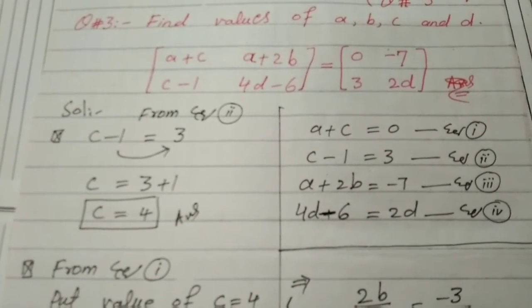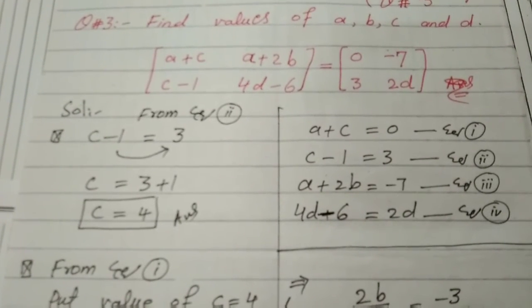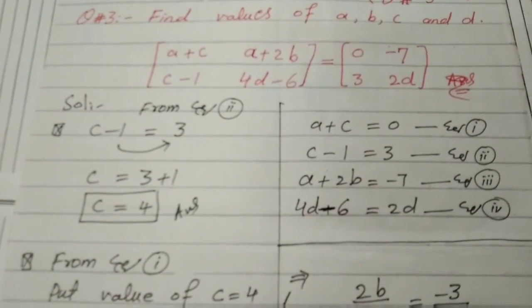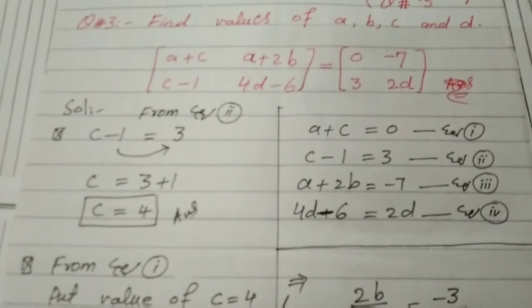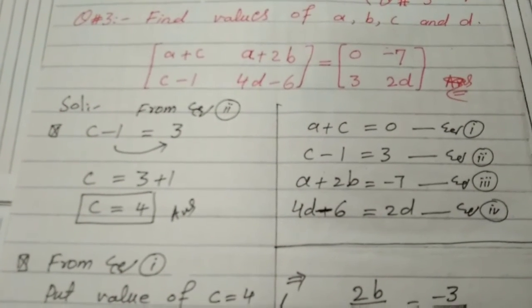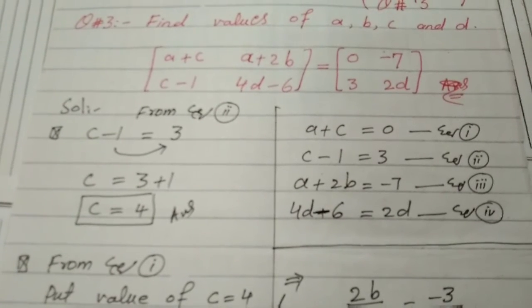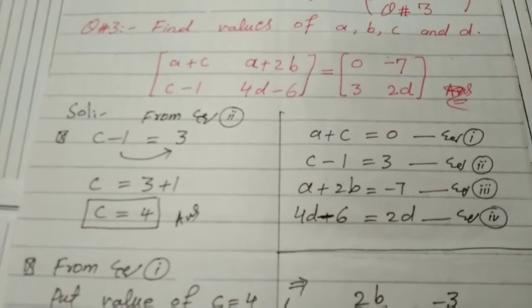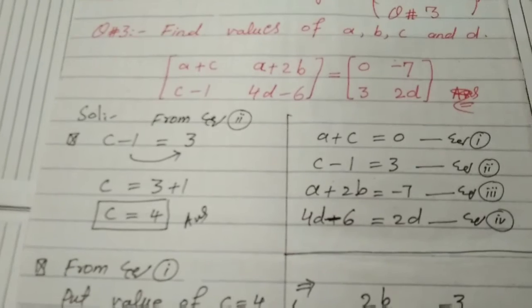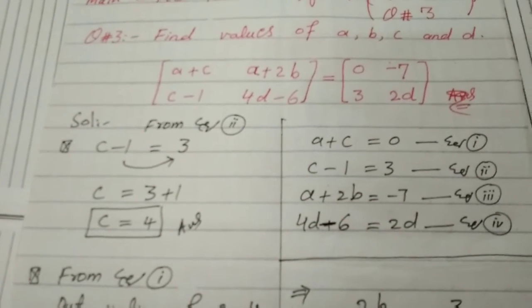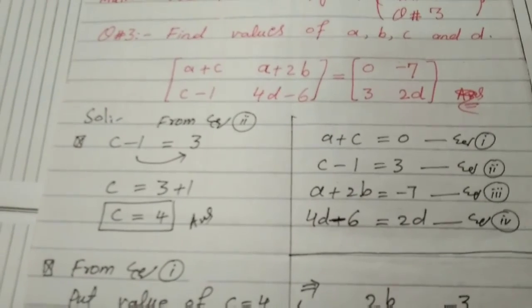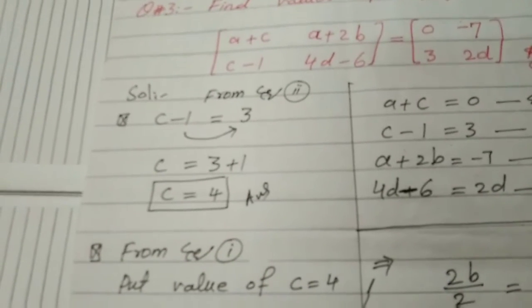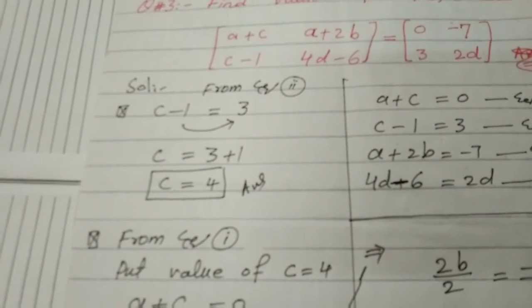a plus c is equal to 0, and c minus 1 equal to 3, and a plus 2b equal to minus 7, and 4d minus 6 equal to 2d. There are four equations we conduct, collect, and explore from these two equal matrices by comparing.